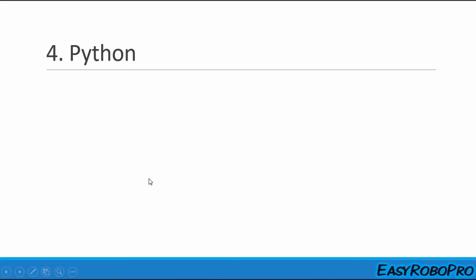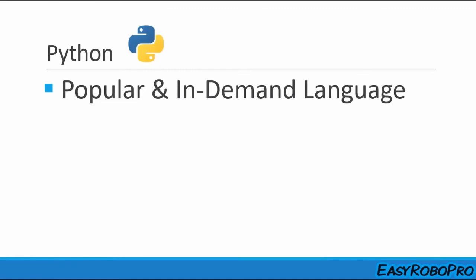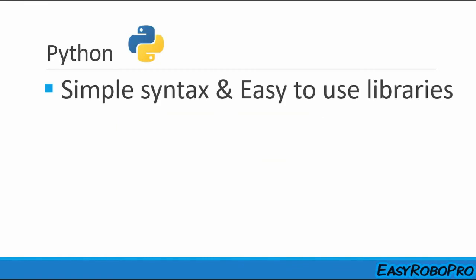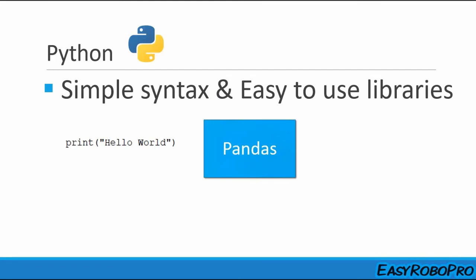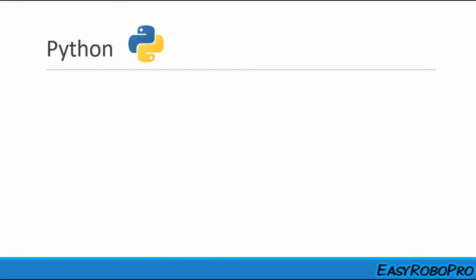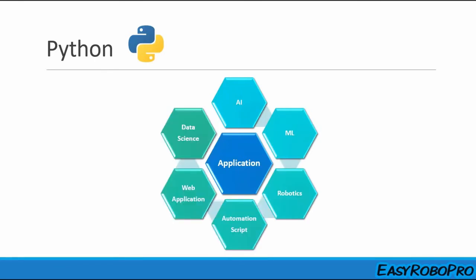At position 4, we have Python programming language. Python is a very popular and in-demand programming language that has gained a lot of popularity in the last few years. It has simple syntax, is easy to use, and has powerful libraries like Pandas, NumPy, Matplotlib, SciPy, and many more. Python is used in artificial intelligence, machine learning, robotics, automation scripts, web applications, and the field of data science.